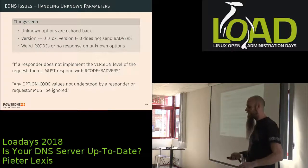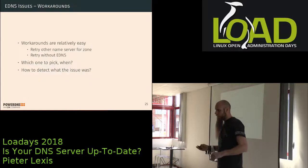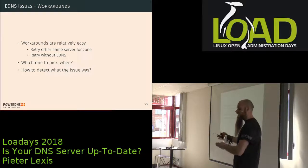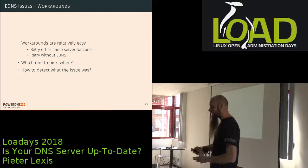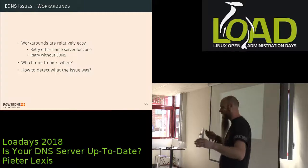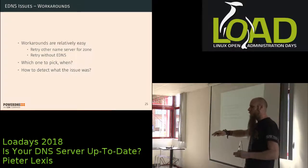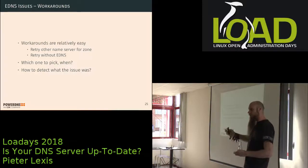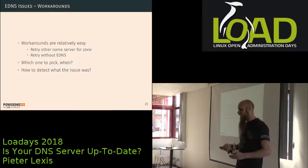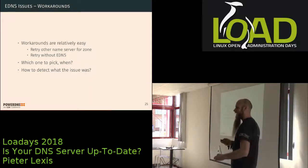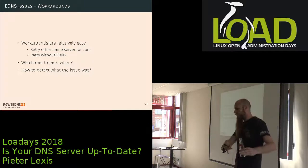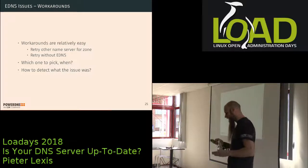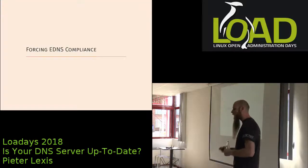What workarounds currently exist? They're relatively straightforward: retry another server in the same zone — you usually have two or more servers serving the same zone, so try the other one and declare this one broken. Or retry without EDNS, because we're not sure if the response means the server is broken or just doesn't understand EDNS. But every choice you make here slows down resolution for the end user, and based on the response it's super hard to detect what the actual issue was.